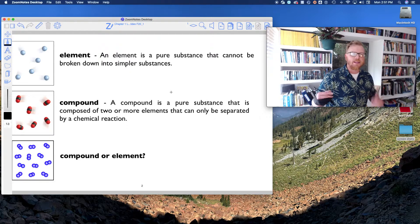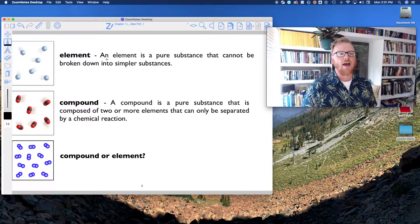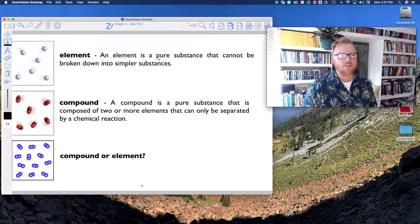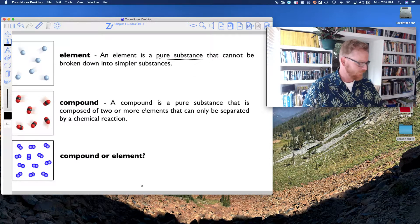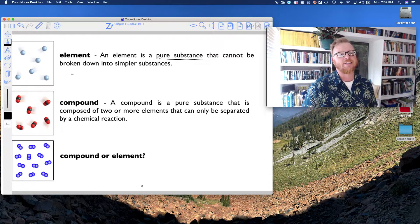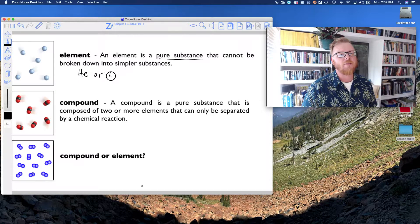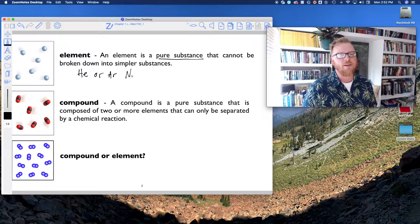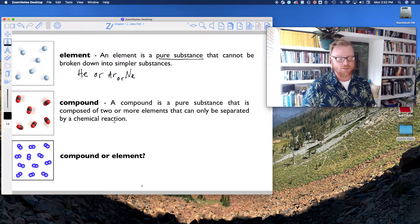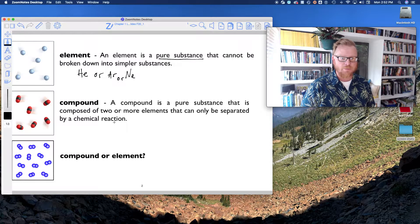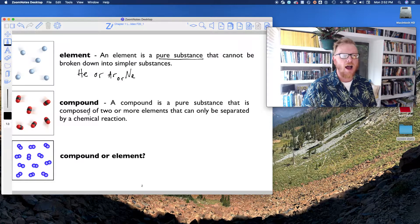Now let's kind of get into this element-compound thing a little bit more. So an element, a better definition: a pure substance that cannot be broken down into simpler substances. And so you can see this picture like a single atom such as helium or even argon or even neon. So these are just some examples of what we call the noble gases, and they're just singular atoms, so they can't be broken down.